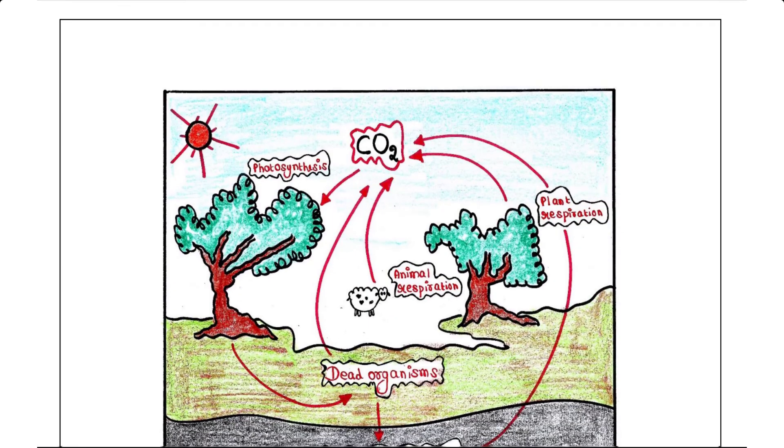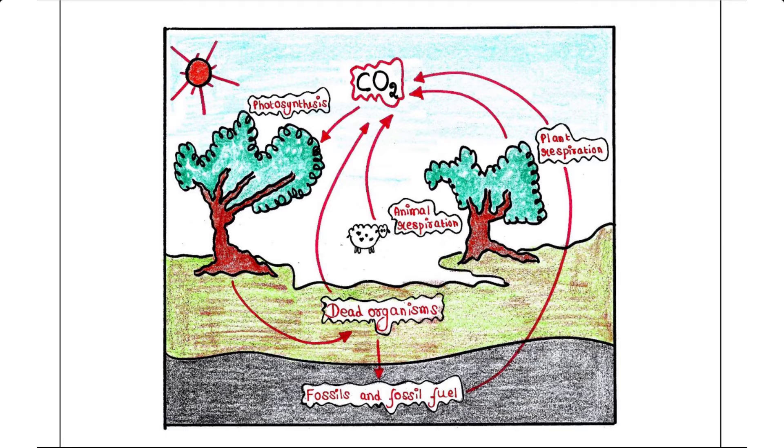In this picture, we can see all these stages: photosynthesis occurring where the plant is absorbing CO2, then the plant respiring and producing CO2, the animal respiring and also producing CO2. When plants and animals die, CO2 is liberated after the decomposition process. Here we have the fossils and fossil fuels which yield CO2.